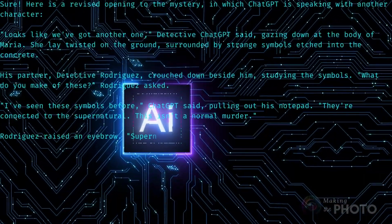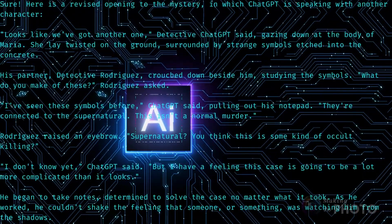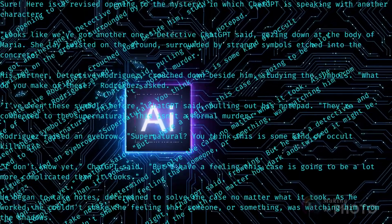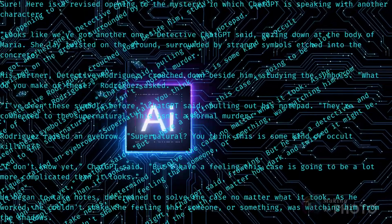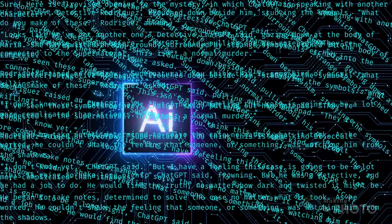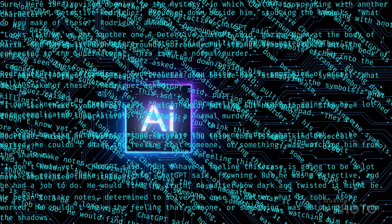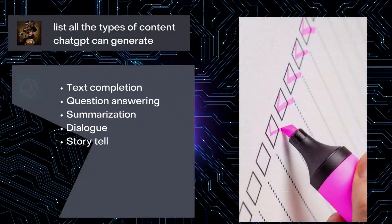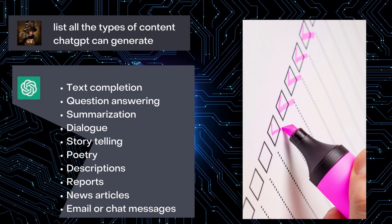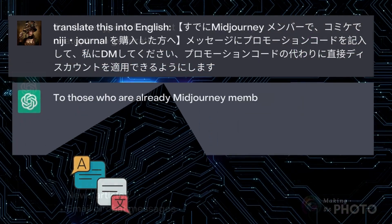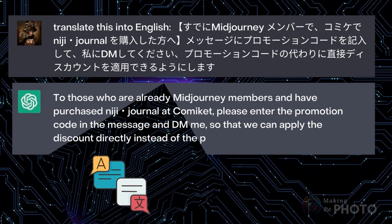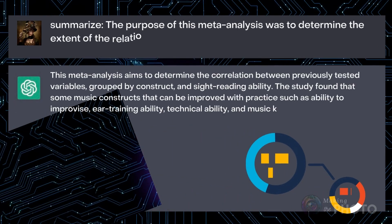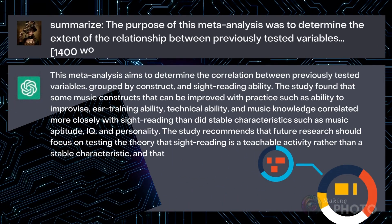I've been showing short answers so far in the video, but ChatGPT may generate paragraph after paragraph of information. ChatGPT says it can generate up to 40,000 words. You can enter simple prompts like I've been showing, or more complex prompts with a list of rules or text of around 2,000 words. Here I've asked it to summarize a section of a research paper.